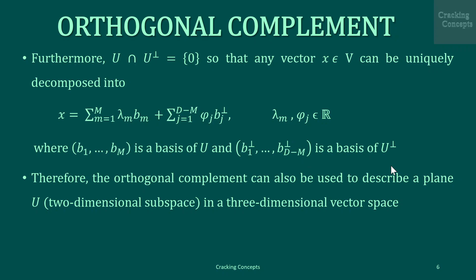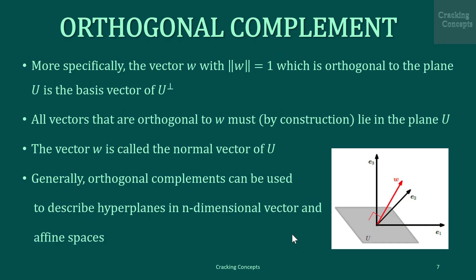The orthogonal complement can also be used to describe a plane U, which is a two-dimensional subspace in a three-dimensional vector space. More specifically, the vector w whose norm is 1, which is orthogonal to the plane U, is a basis vector of its orthogonal complement. All vectors that are orthogonal to w must lie in the plane U, and w is called the normal vector of U. Generally, orthogonal complements can be used to define hyperplanes in n-dimensional vector and affine spaces.